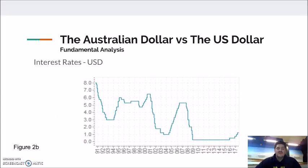When comparing the interest rates of the US and the correlation on the US dollar, we were met with very similar circumstances. As the US cash rate increased since the beginning of 2016, the USD strengthened when compared to other currencies such as the Euro and, more interestingly, the AUD. Therefore, it is safe to assume that the cash rate has a very obvious and meaningful relationship with the exchange rate.